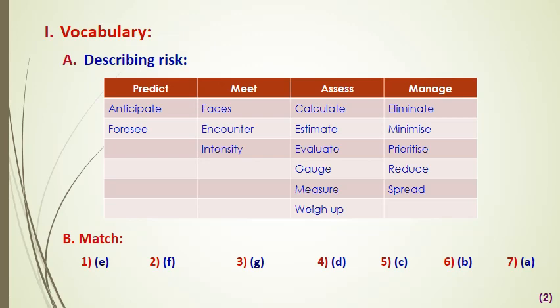Number three: 'Trying to minimize risk is an important part of business strategy.' This is letter D. Number four, letter D: 'It is impossible to eliminate all risk when entering a new market.' Eliminate means to end. Number five, letter C: 'It's difficult to foresee the risks involved in setting up a new business.' Number six: 'Actuaries calculate risk,' letter B, 'in order to advise insurance companies.' Actuaries are persons who compile and analyze statistics and use them to calculate insurance risks and premiums. Number seven: 'It's important to consider the risks involved when sending staff to work in dangerous locations.'